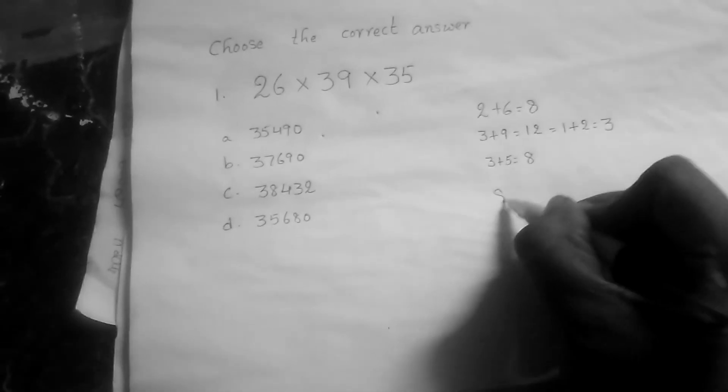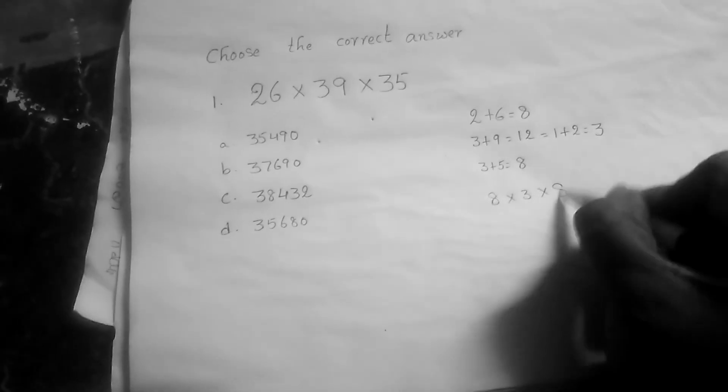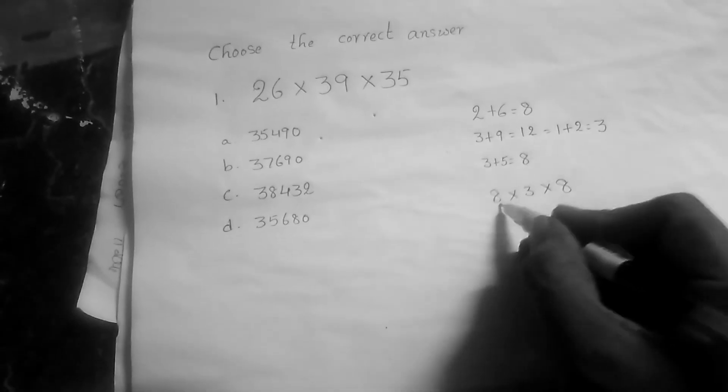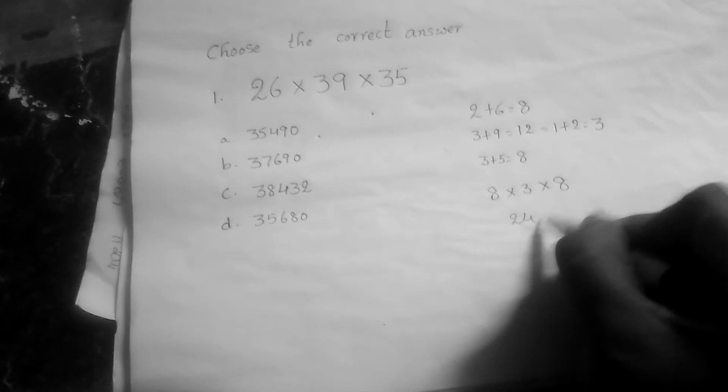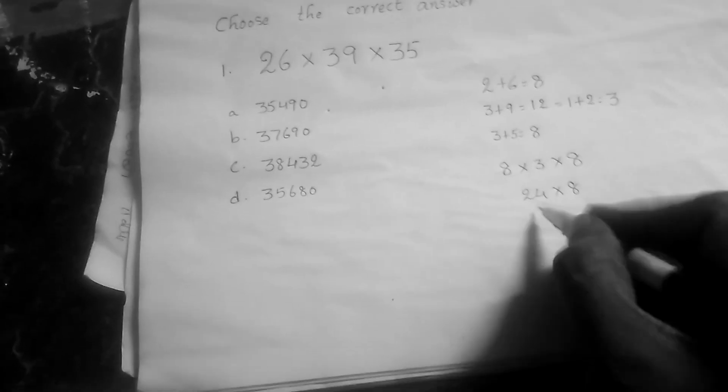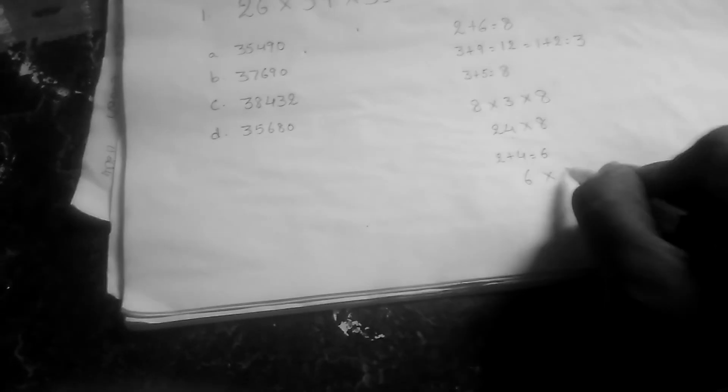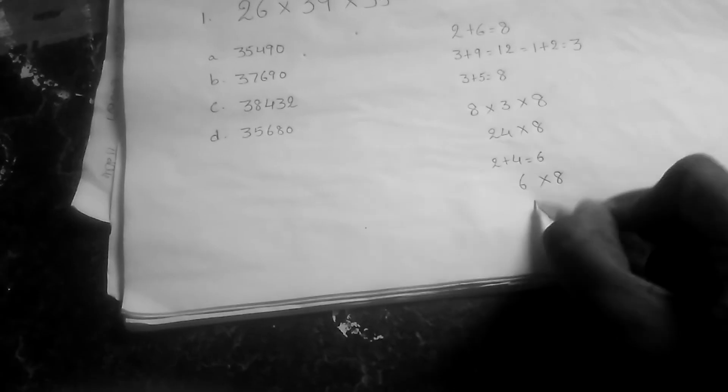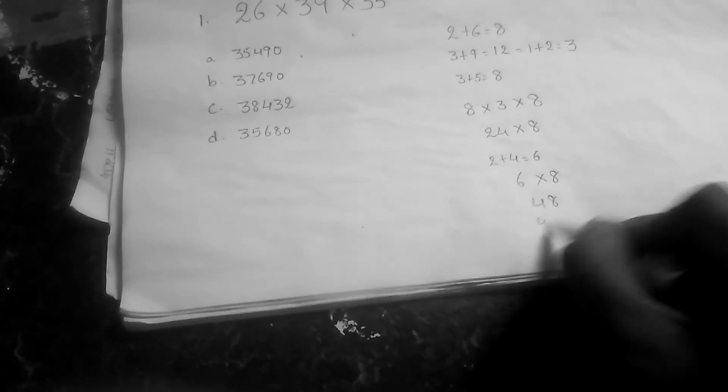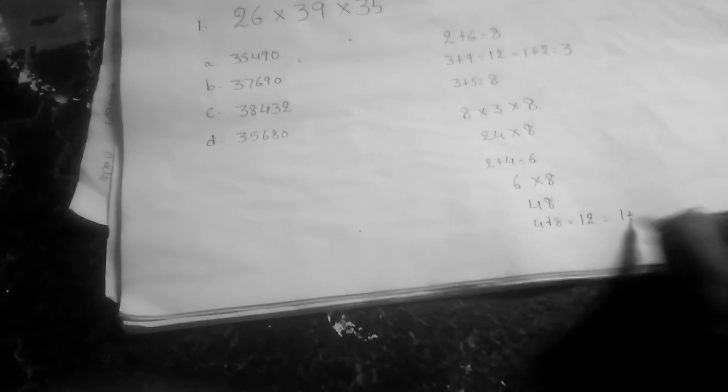So what are the numbers we get? 8 in the first, 3 in the second, and 8 in the third. Now you have to multiply it: 8 times 3 is 24. 24, you have to get a 2-digit number, so those numbers you have to add. 2 plus 4, that is equal to 6. 6 into 8, 6 times 8 is 48. Those numbers you have to add: 4 plus 8, that is equal to 12, means 1 plus 2, that is equal to 3.